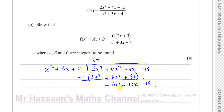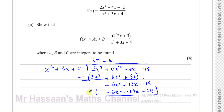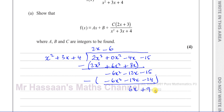Then I go through the same process: x squared goes into minus 6x squared minus 6 times. Multiply minus 6 with all the denominator terms: minus 6x squared, minus 18x, and minus 24. We subtract this line from the one above. So we have negative 6x squared plus 6x squared which is 0; minus 12x plus 18x which is 6x; and minus 15 plus 24 which is plus 9. Now we have our answer.